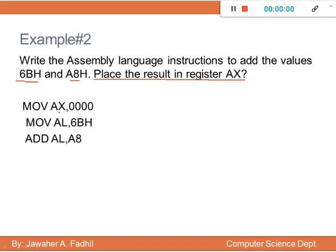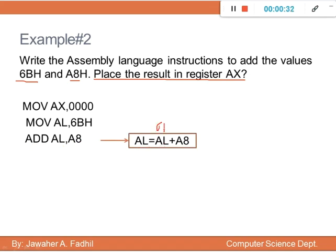First, write MOV AX, 00 to reset AL and AH. Then move one of the values to AL: MOV AL, B6h. We can then directly add the second value, 8Ah, with AL using the ADD instruction. After execution, AL will be the previous value B6h added with 8Ah.